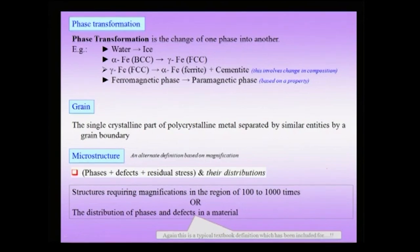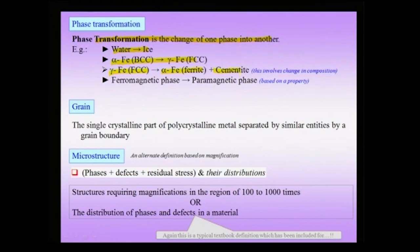We have been using the term phase transformation and will consider a few examples. A phase transformation implies a change of phase from one phase to another — for instance water to ice when you cool a water system, or alpha-iron BCC going to gamma-iron FCC when heated. Additionally, gamma-iron at high temperatures when cooled undergoes a phase transformation producing alpha-iron and cementite, which involves a change in composition apart from a change in phase. The starting phase gamma-iron is FCC, while cementite is orthorhombic and ferrite is BCC. You could also heat a ferromagnetic phase and produce a paramagnetic phase — a phase transformation based on property.